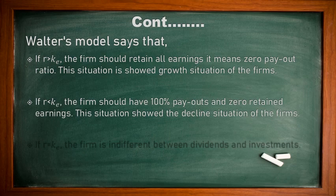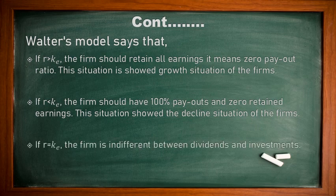Walter Model says number two: if the required rate of return is less than the cost of capital, the firm should have a 100% payout and zero retained earnings. This situation shows the decline situation of the firm. Number three: if the required rate of return is equal to the cost of capital, the firm is indifferent between dividend and investment decisions. If R and KE are both equal, it is not going to affect the company's value or share value.